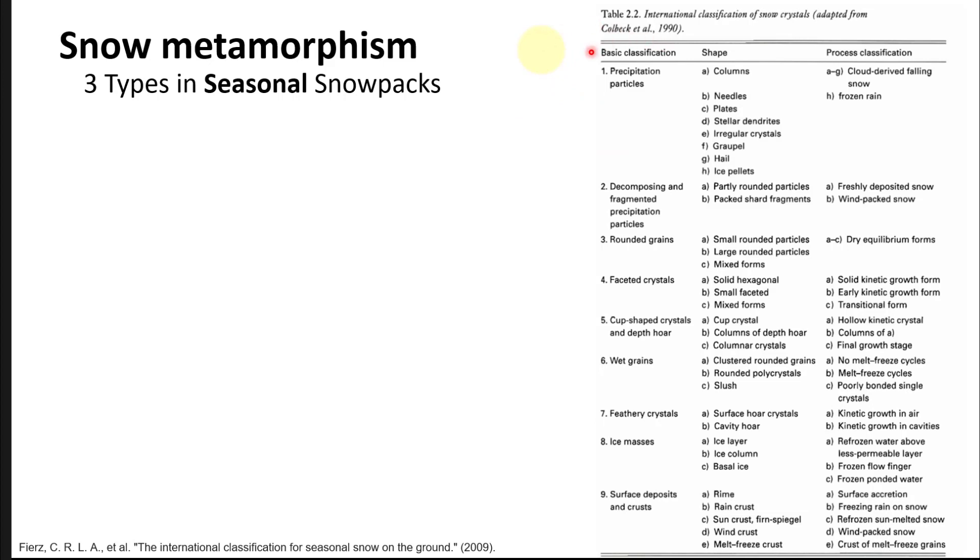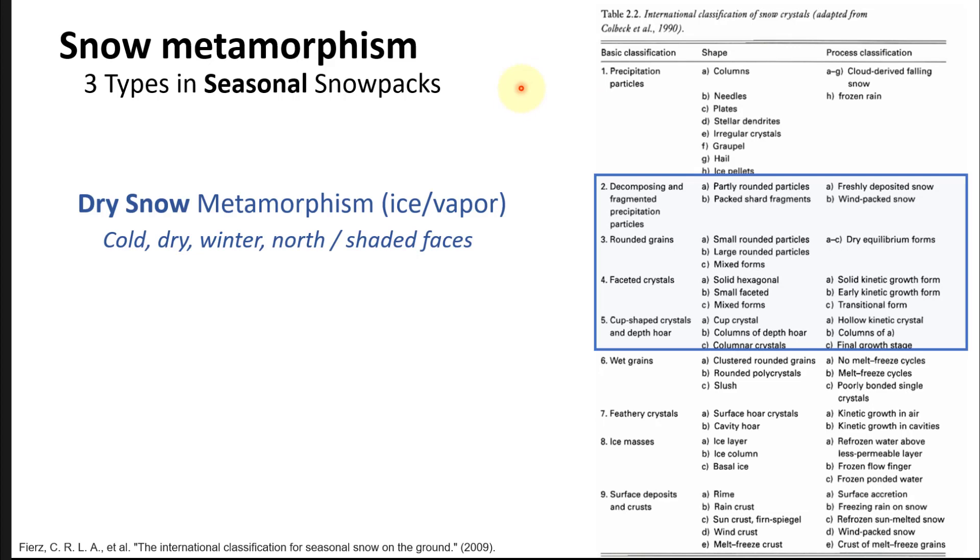These are the types of crystal grains and the sub-classification of those grains, broken out by the general types of metamorphism that lead to these grain types in snowpack. Dry snow metamorphism is when you have both solid ice and gaseous water vapor in some equilibrium. The types of grains are dictated by how far from equilibrium you are, including kinetically driven or persistent grain types like facets and depth hoar, equilibrium grain types like rounded grains, and decomposing grains in between.